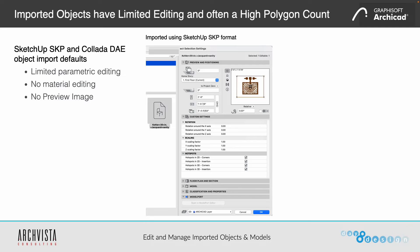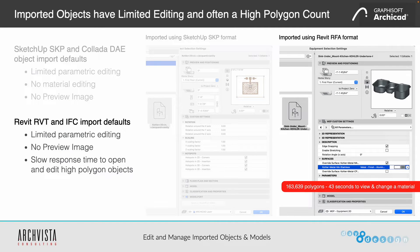There's no material editing and no preview image. Similarly, if you're importing a Revit RFA or IFC model, it's kind of the same thing — limited parametric editing, though Revit does offer a bit more through the RFA format when it comes into ArchiCAD. There's still no preview image. And one of the big issues for both Revit and SketchUp/DAE and other imported formats is the polygon size and polygon count, which can have a big hit on the performance of the object and model.